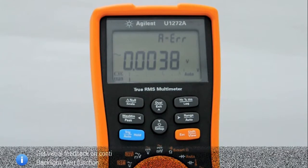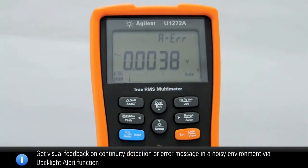Backlight alert: the next function is the U1270 series backlight alert. The handheld's backlight will flash to alert users to the presence of circuit continuities and operator errors such as incorrect lead connections.